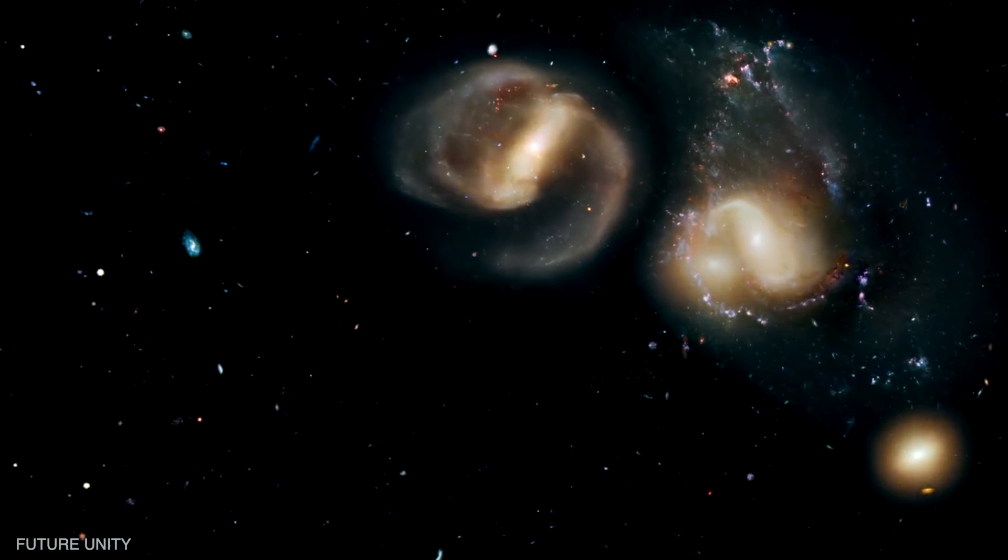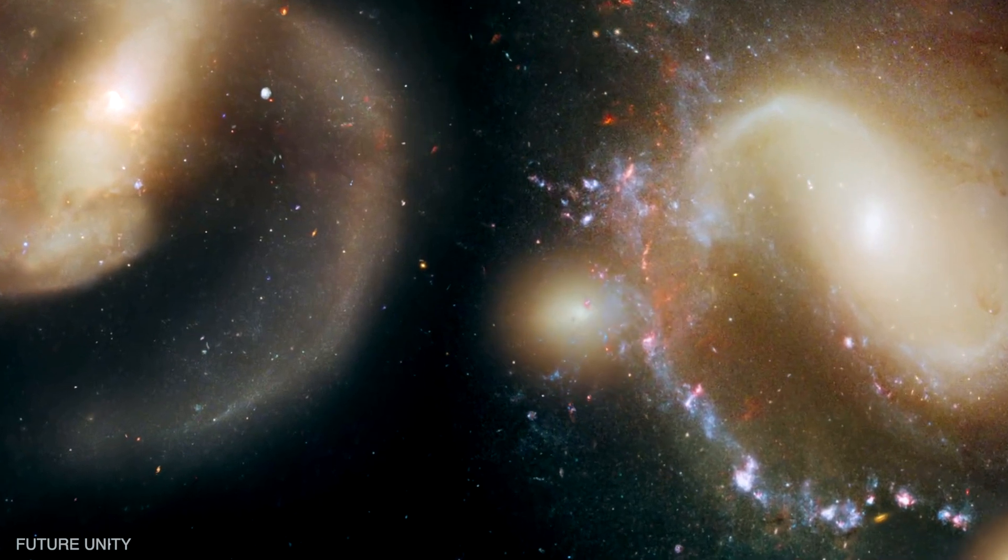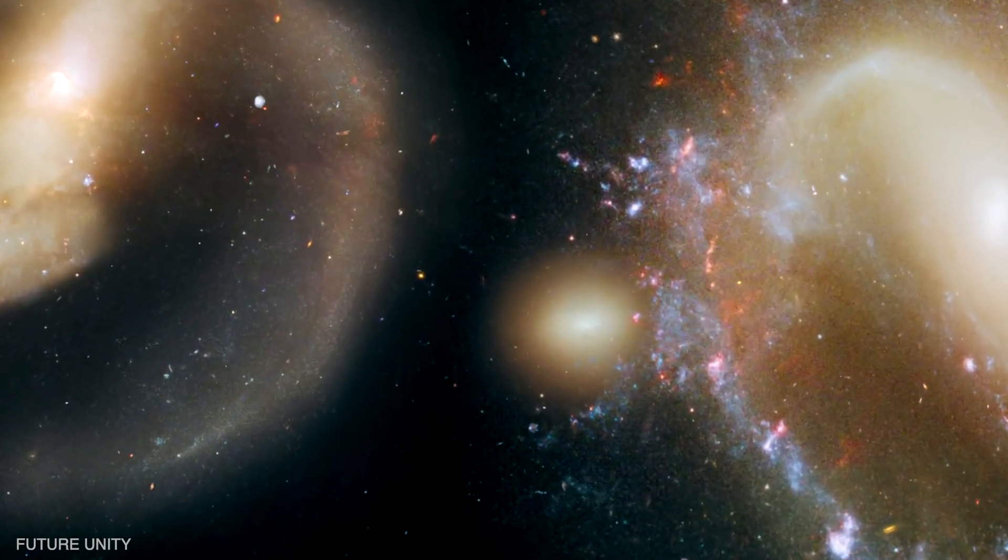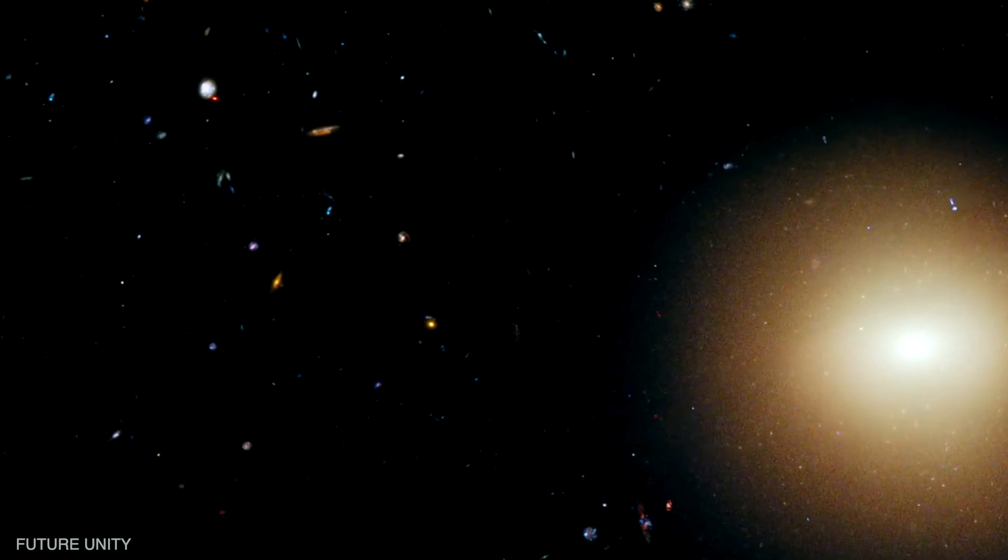Three of the galaxies have distorted shapes, elongated spiral arms, and long, gaseous tidal tails containing myriad star clusters, proof of their close encounters. The observation of these encounters will tell us how new stars are formed when stars collide among themselves, and how gas in galaxies get disturbed due to these collisions.